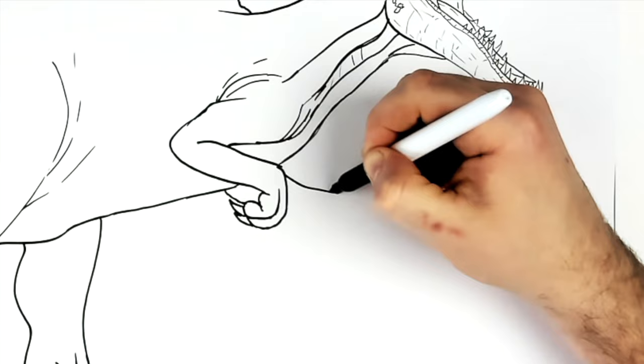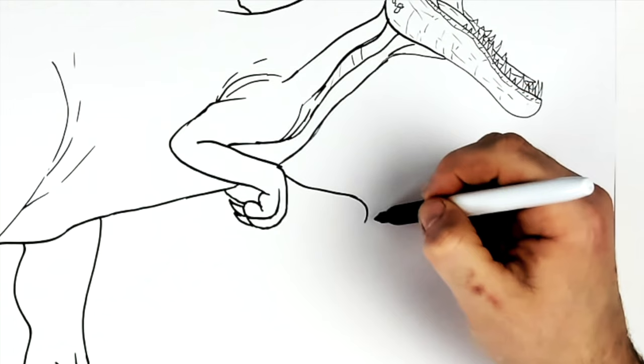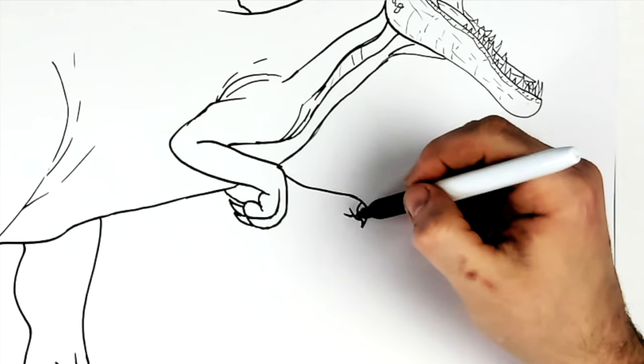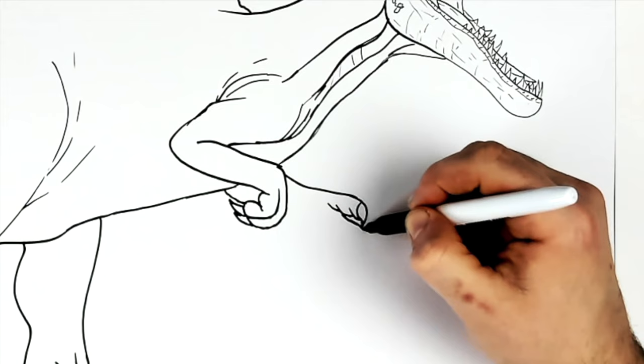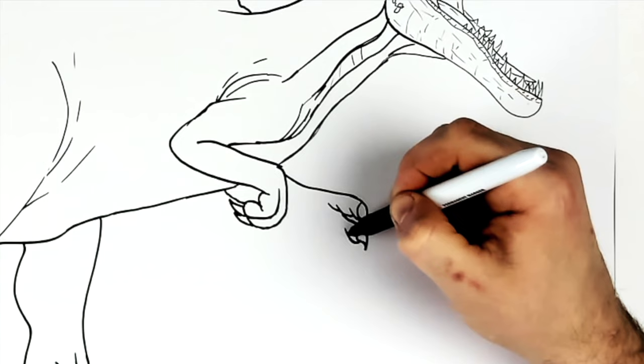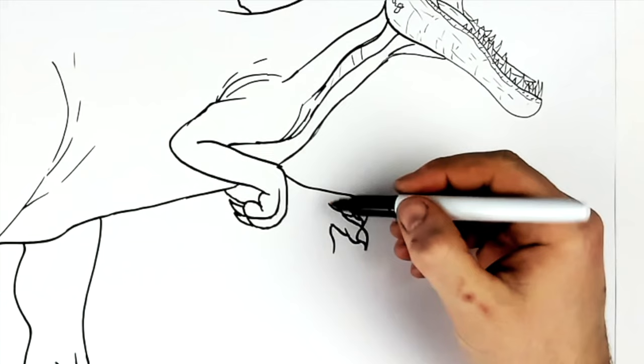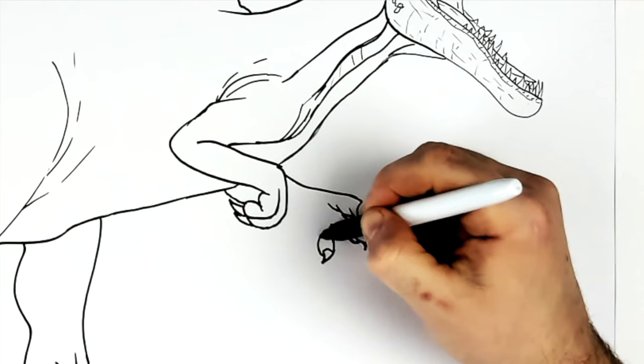And then his other arm is kind of sticking out like a claw. So coming out this way, let's see, you just have like a big claw sticking off here. Like this, and then it goes around like so.